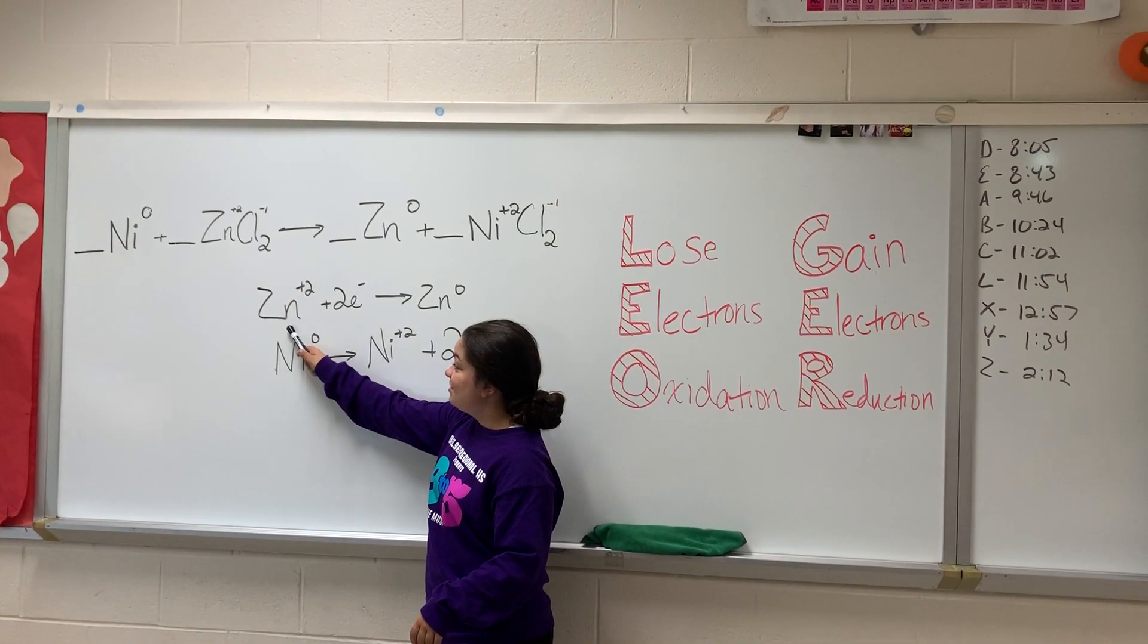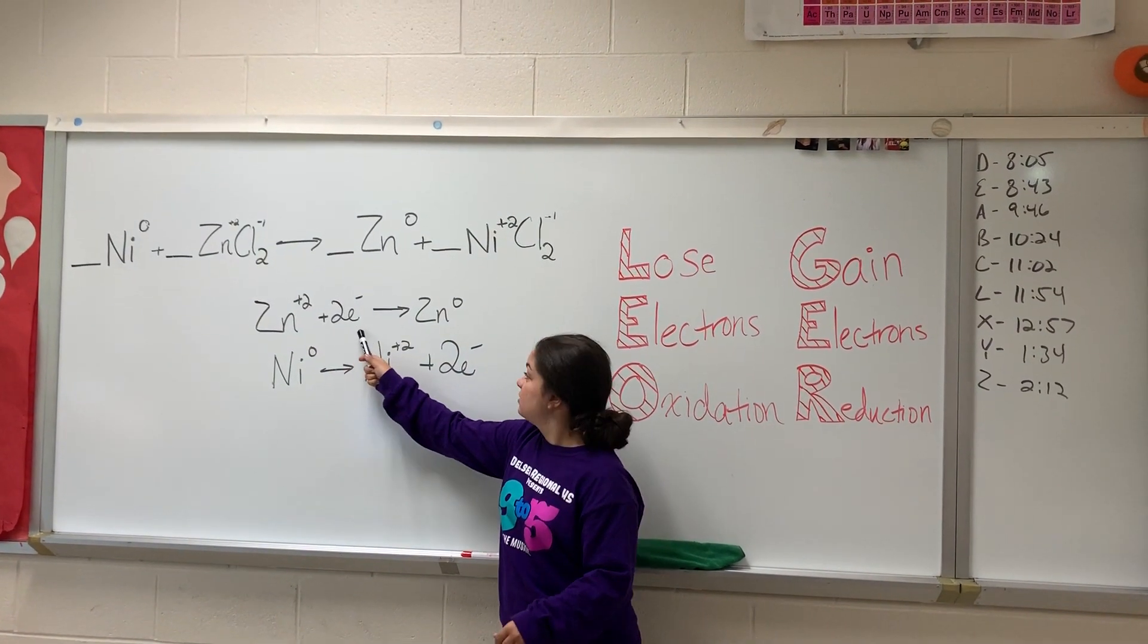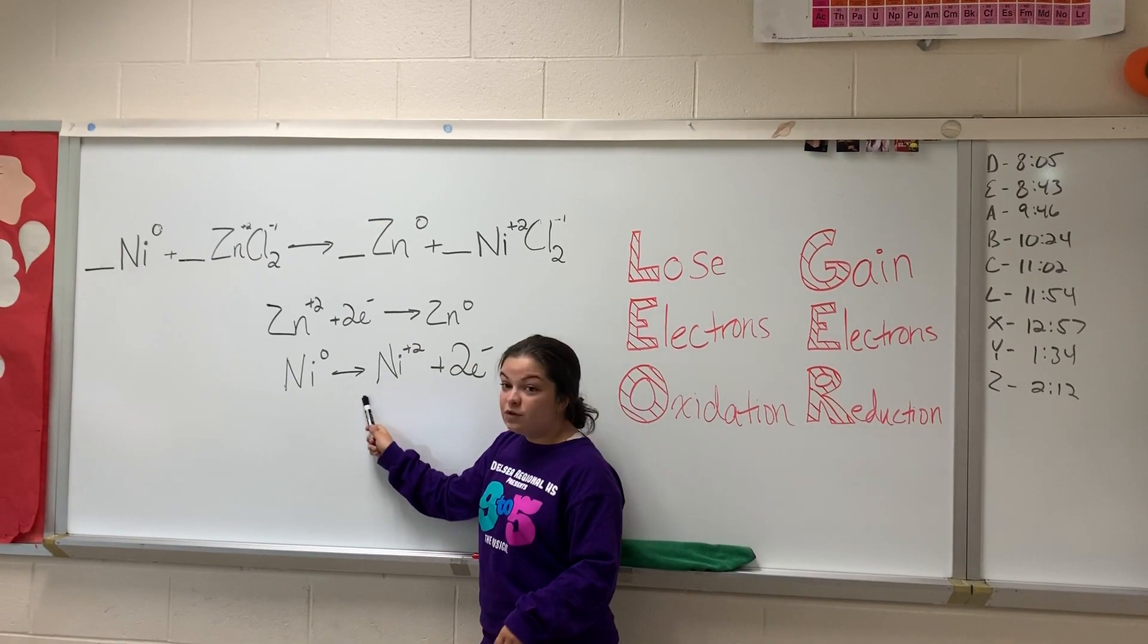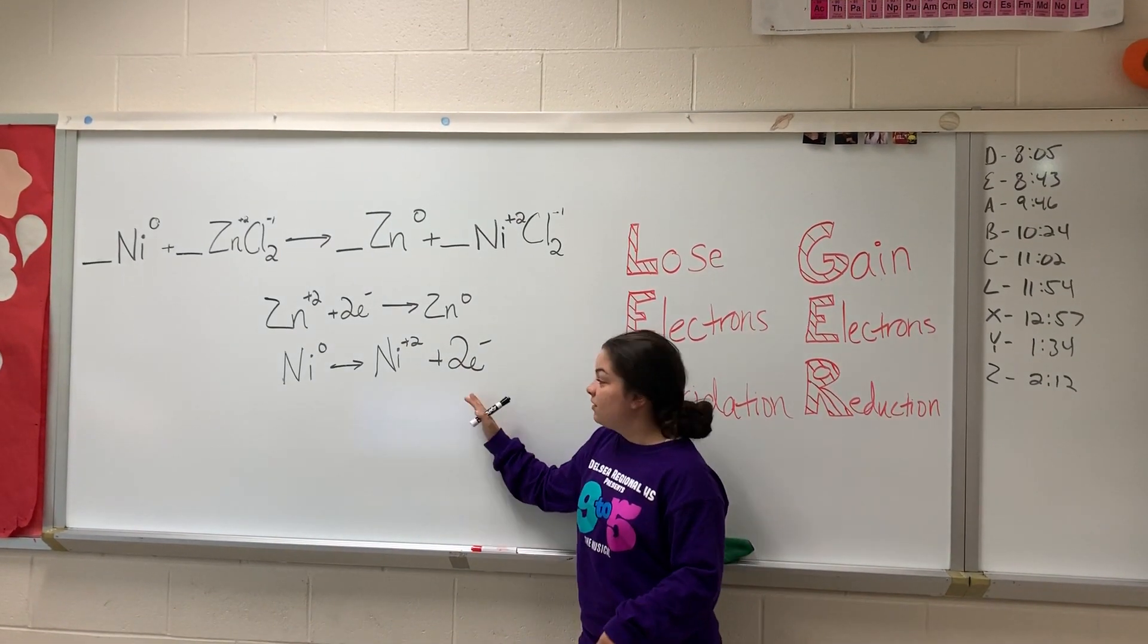So when zinc gains two electrons, it becomes zero. And when nickel loses two electrons, it becomes plus two.